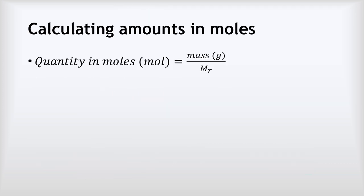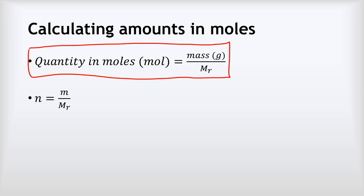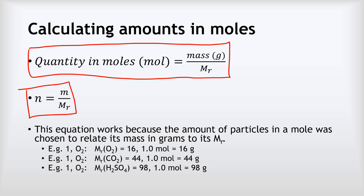So how do we calculate amounts in moles? We've got a straightforward calculation: the quantity in moles is equal to the mass of something in grams divided by its relative formula mass. In symbol form: lowercase n for the number of moles equals the mass M divided by the relative formula mass MR. This equation works because the amount of particles in a mole was chosen to relate its mass in grams to its MR. For example, oxygen has an MR of 16 and one mole of oxygen is 16 grams; carbon dioxide has an MR of 44 and one mole is 44 grams; sulfuric acid has an MR of 98 and its molar mass is 98 grams.